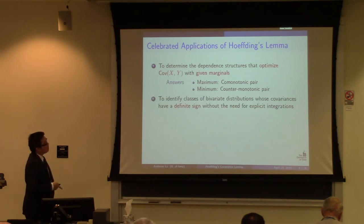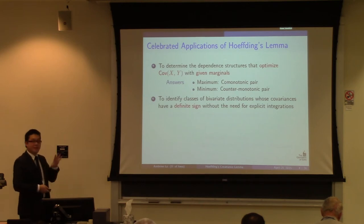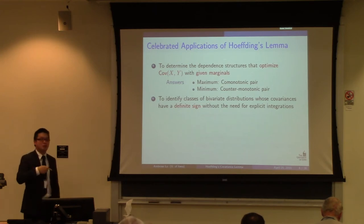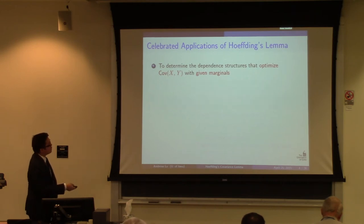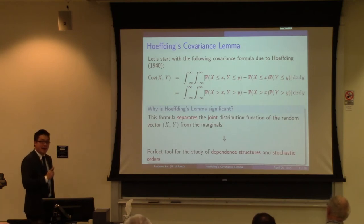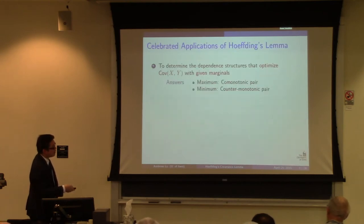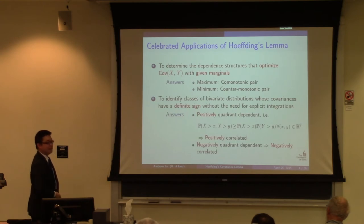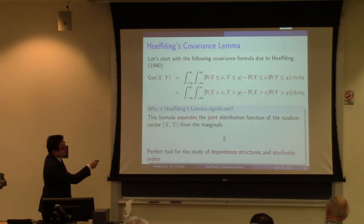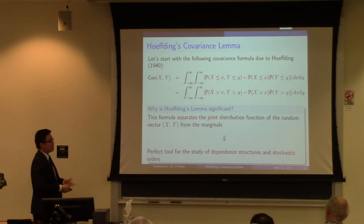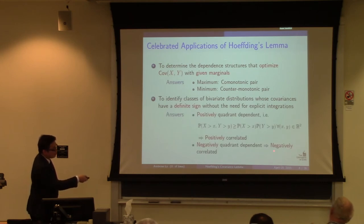Another application of Hoeffding's lemma is to identify classes of bivariate distributions with a definite sign on their covariance, without any integration — and integration in general is not easy. If a random vector satisfies the condition that the integrand is always non-negative, in the literature we call this a positively quadrant dependent random vector. Then it follows directly from the formula that the covariance must be non-negative. And the opposite is also true: for negatively quadrant dependent random vectors, the covariance must be negative.